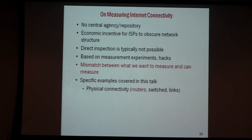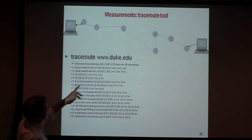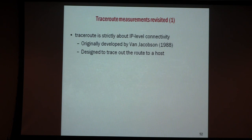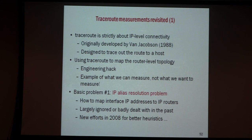Naively speaking, traceroute gives you all the routers you encounter going from A to B. But what gets lost in these measurement-based studies — particularly by physics scientists — is that traceroute is actually a hack. It was never designed to map the physical structure of the network. It was designed by Van Jacobson for one particular purpose: just to check how you go from A to B. One key problem is that it does not give you the router — it gives you an interface IP address of the router. A router can have many such addresses, and in general there is no certain way to map interface IP addresses back to a router.